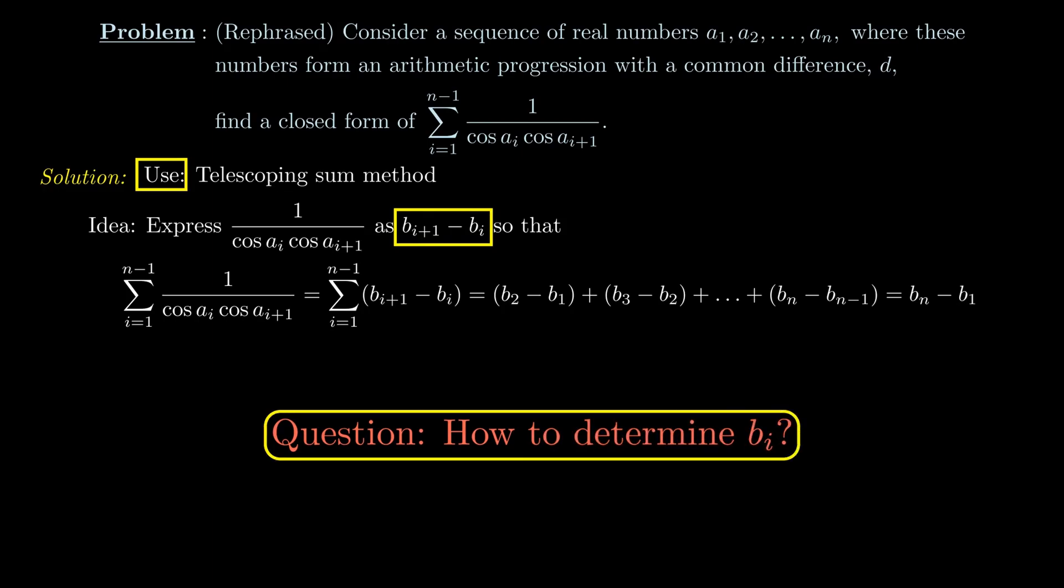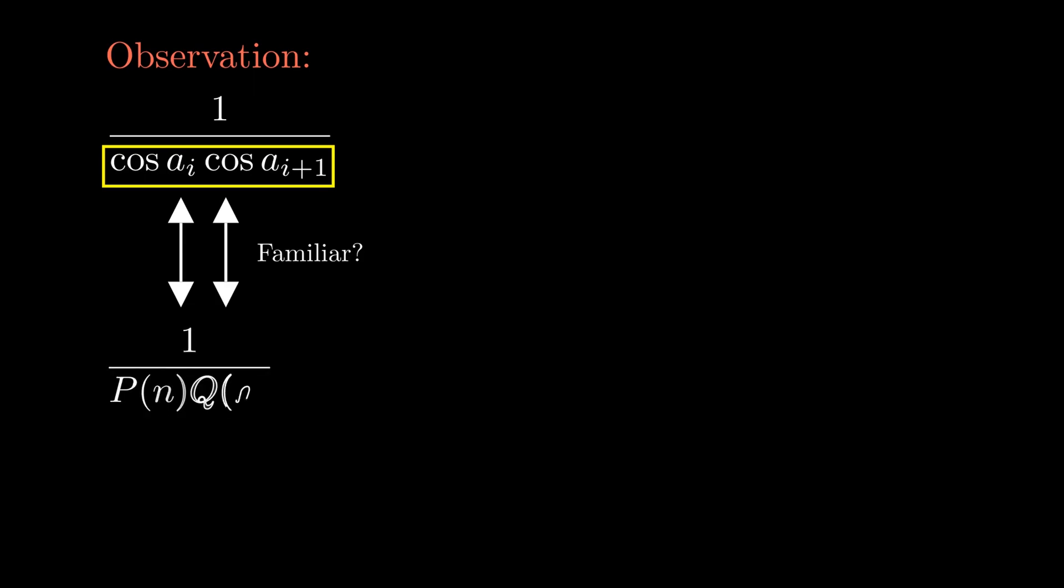Well, this is where we'll make an educated guess by observing that the denominator of the sum is a product of two cosine functions. And doesn't this seem familiar to having a product of two polynomial factors in the denominator of a fraction? For example, 1 over n times (n+1).